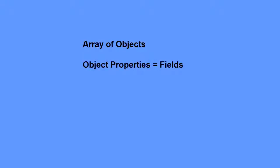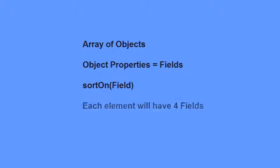You can create an array of objects, and each object can have its own properties. In ActionScript 3, these properties are called fields. The sortOn method is used to sort arrays on these fields. In this example, I'm going to create an array in which each element has four fields.